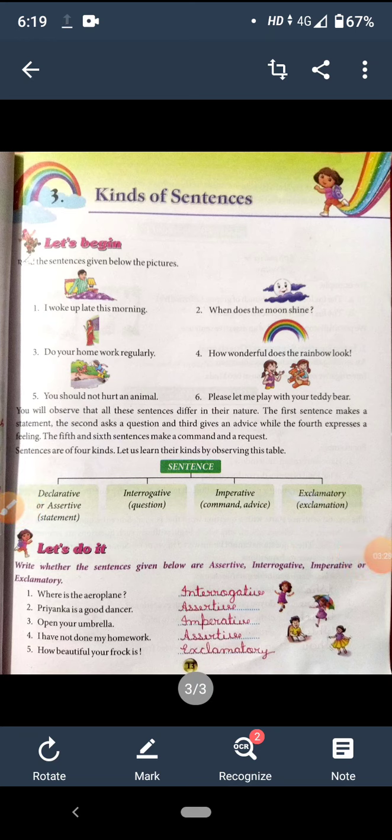Sentences are of four kinds. Let us learn their kinds by observing this table. Sentences are of four kinds: Declarative or assertive, that is statement. Interrogative: question.